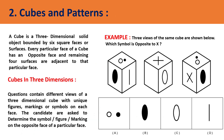Now coming to cubes and patterns. A cube is a three-dimensional solid object bounded by six square faces or surfaces. Every particular face of a cube has an opposite face and the remaining four surfaces are adjacent to that particular face. You have to concentrate on one face and identify what is lying opposite to that particular face.